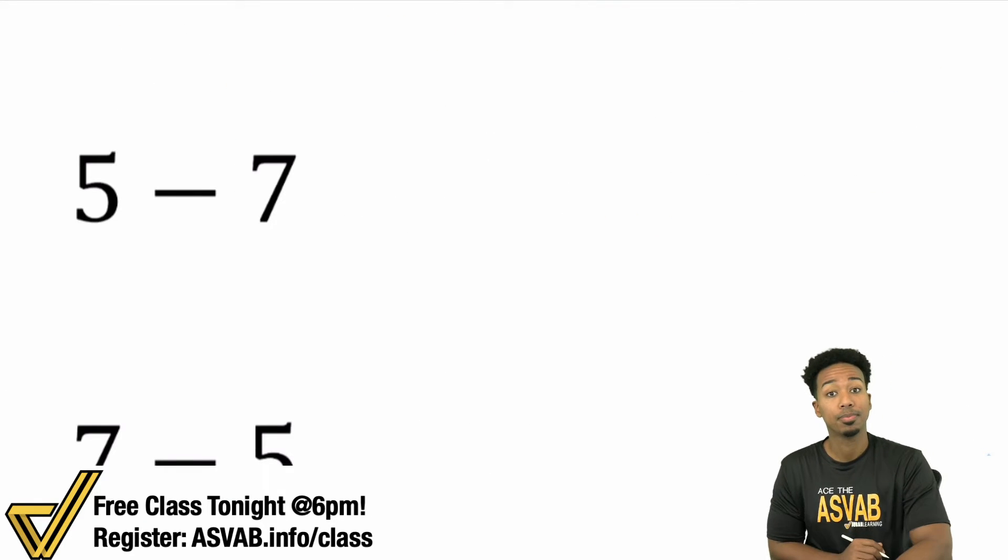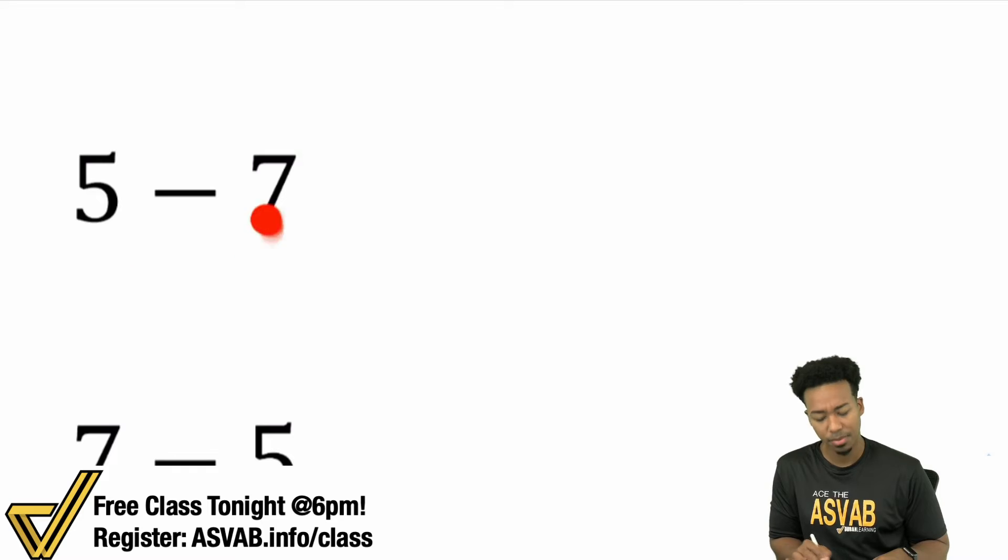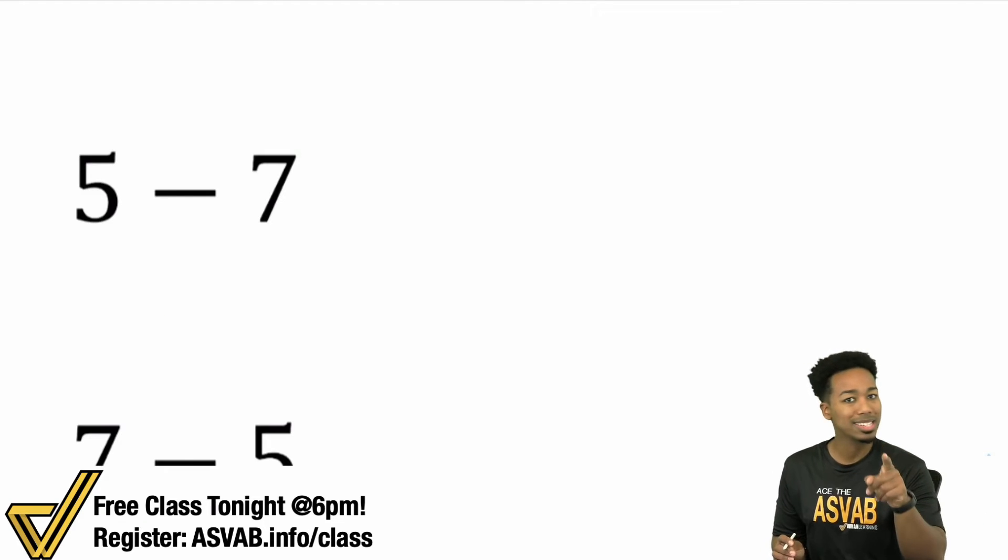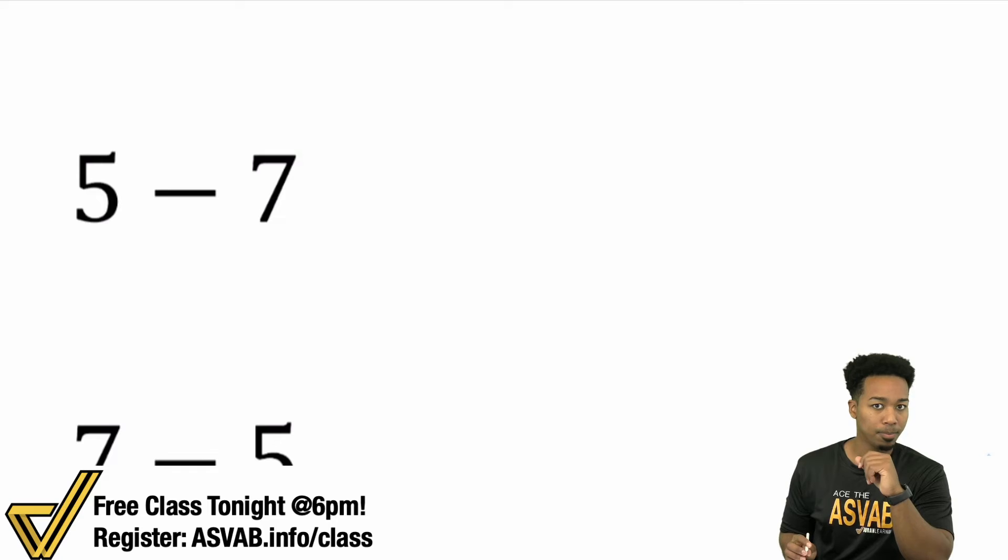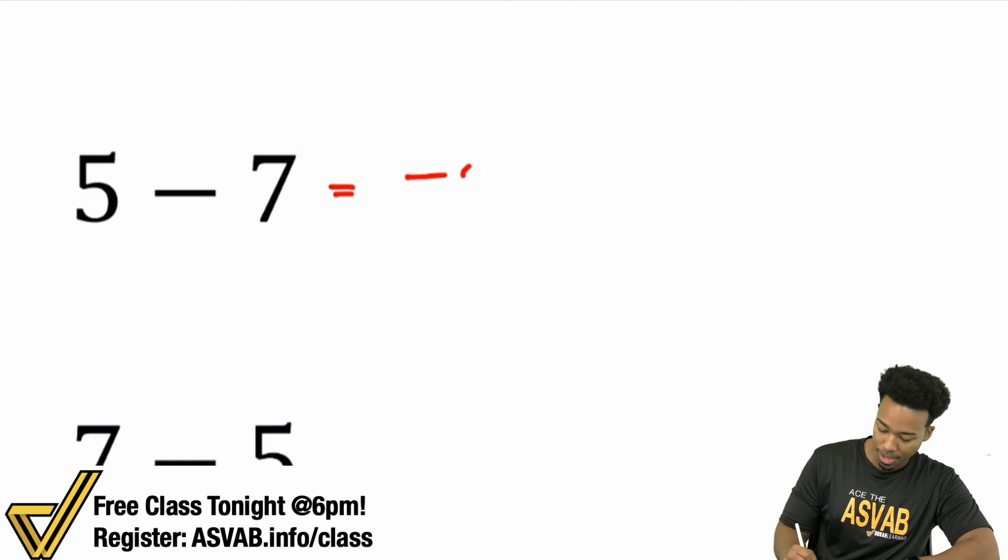Let's try another example. So we have 5 minus 7. Again, we have a positive number and we're subtracting 7. You can think of this like adding a negative 7 because again, subtracting and adding a negative, same deal. So you have 5 minus 7. Well, what's going to happen there? Same deal. Take the difference. 5 minus 7 or 7 minus 5 is going to be 2. But this time it's going to be a negative 2 because the 7 is the bigger number and you'll keep it negative. So right there, negative 2.